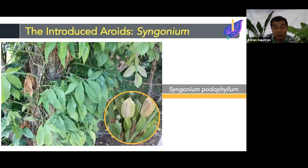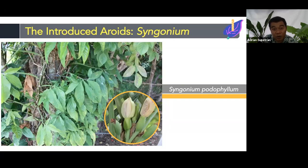We also have Syngonium, or Kamay de Castila — Syngonium podophyllum. It is also known as an invasive species in research articles, and it is now present in Cebuyan Island. It is difficult to trace how it arrived, but it has already firmly attached itself to various trees, posts, and structures in the urban areas of Cebuyan Island. As long as there is moisture it can survive, and we don't know the potential impact it may have on the environment.